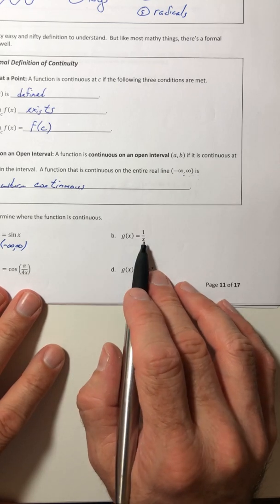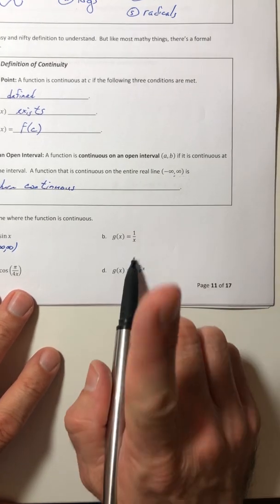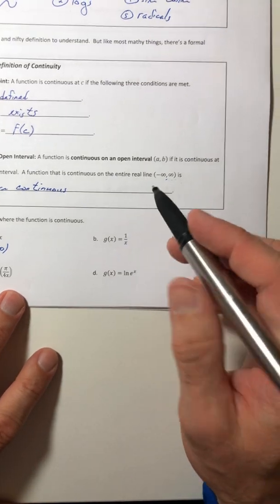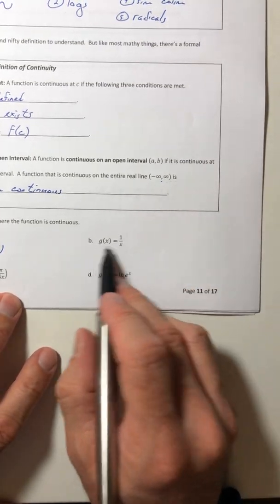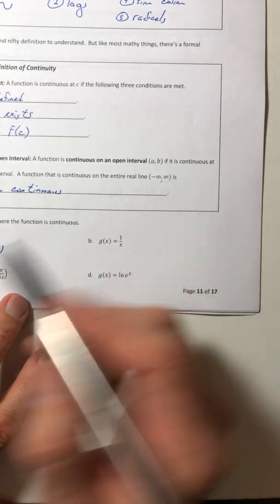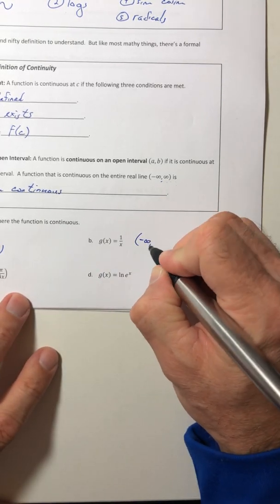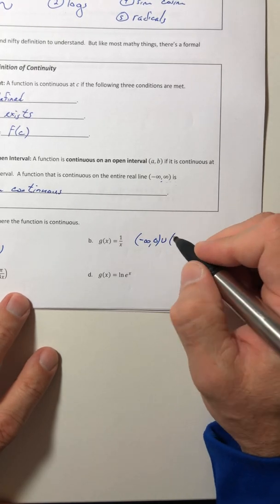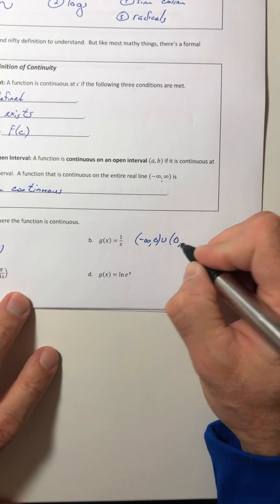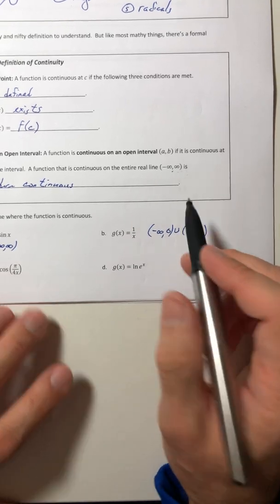Moving over to part B, there's one number that you can't stick in for x and that would be x equals zero. Any other number is fair game. So on any other x value, it's continuous. We just got to leave out the zero. Asking where a function is continuous is almost like asking what the domain is.